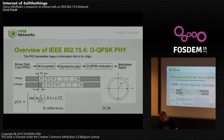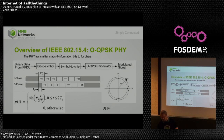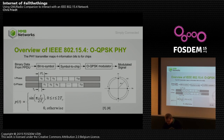We have gray-coded differential modulation, so you only get maximum phase shifts of 45 degrees. No zero crossings mean zero DC components, which is great. It's more robust to multipath, and there's a half-sine pulse shape.